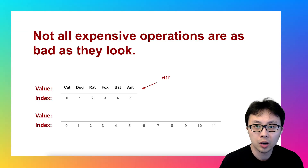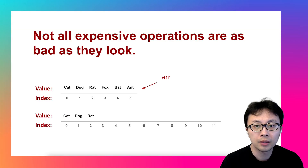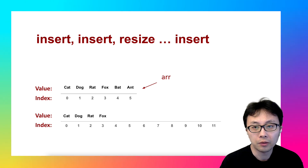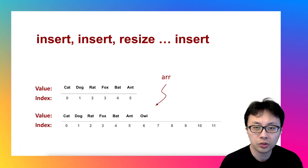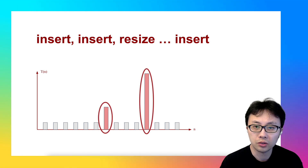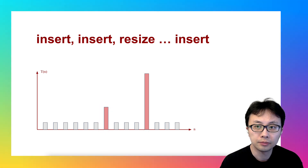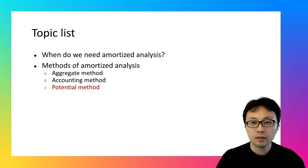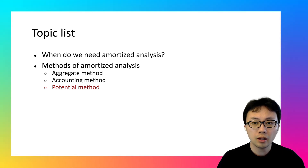Not all expensive algorithm operations are as bad as they look. Have you ever wondered how dynamic arrays can still claim constant time inserts, even when they occasionally copy everything just to resize? If you are just joining, this is part of our deep dive into amortized analysis, but don't worry — we will start fresh.